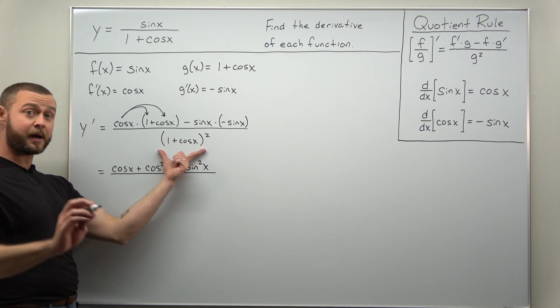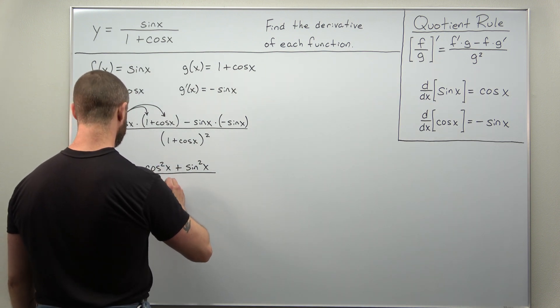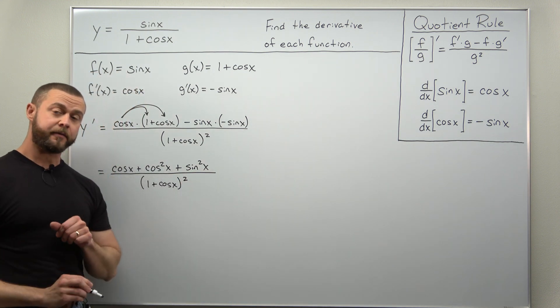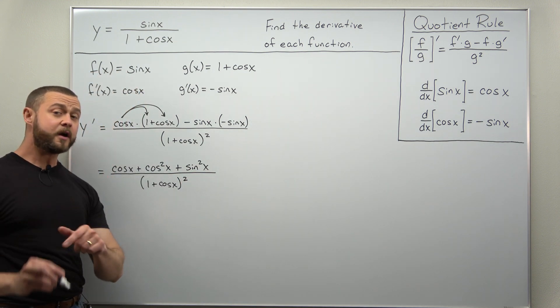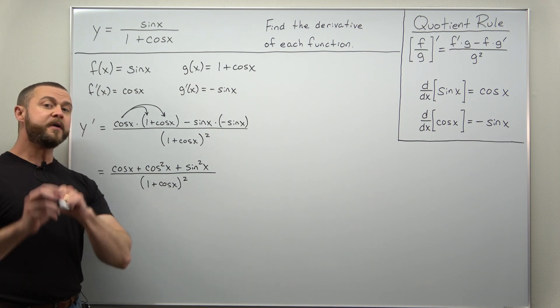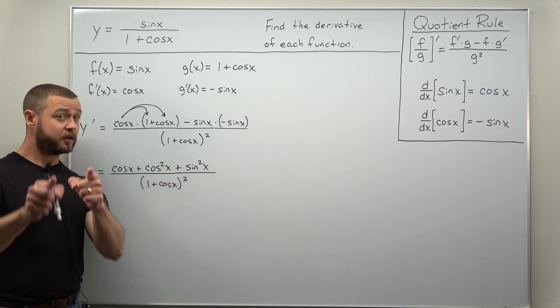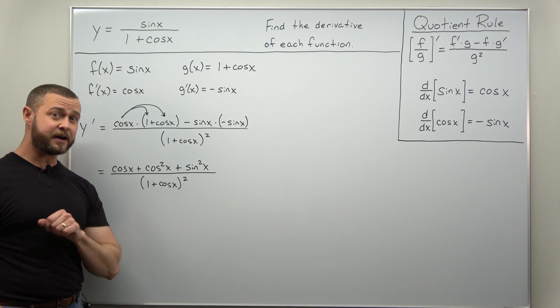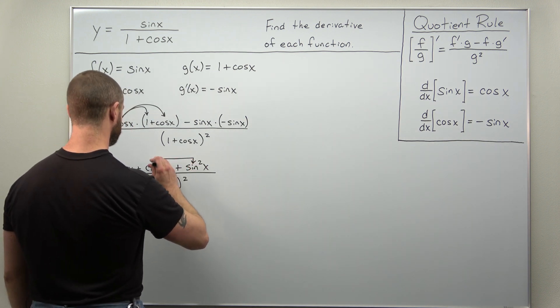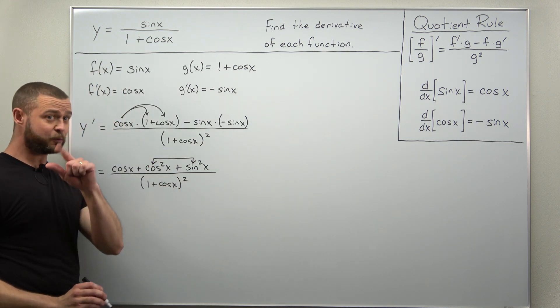And again we're going to keep our denominator factored and keep it as 1 plus cosine of x squared. And there we go. That is our derivative but we can still simplify it further. Always be aware as soon as you see squared trig functions you can probably apply a Pythagorean identity. That's exactly going to be what we do here. Cosine squared of x plus sine squared of x equals 1.